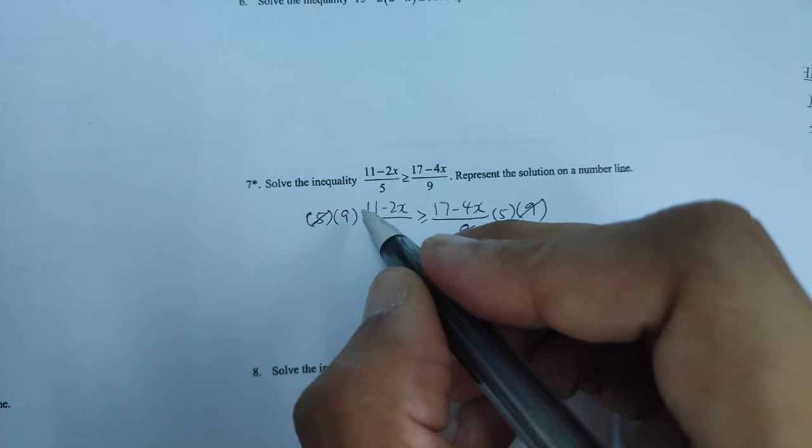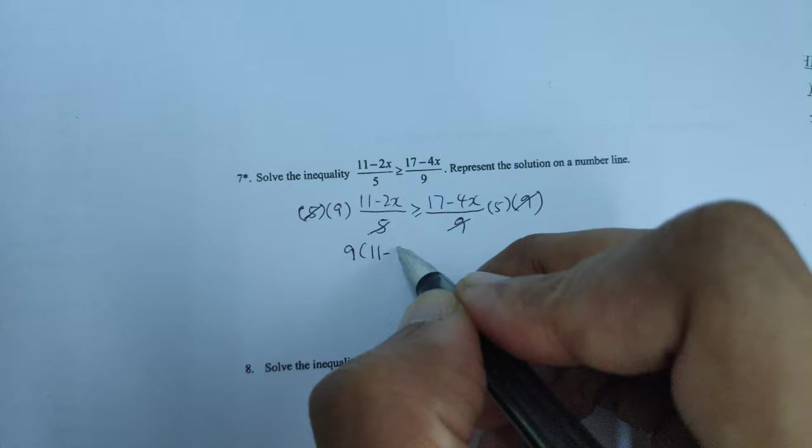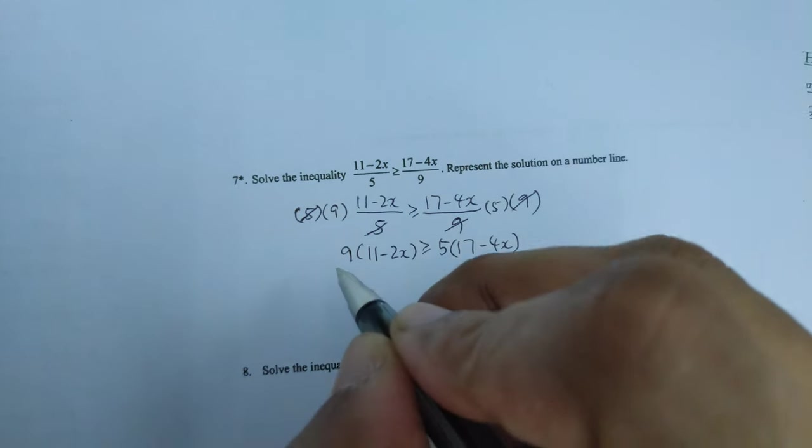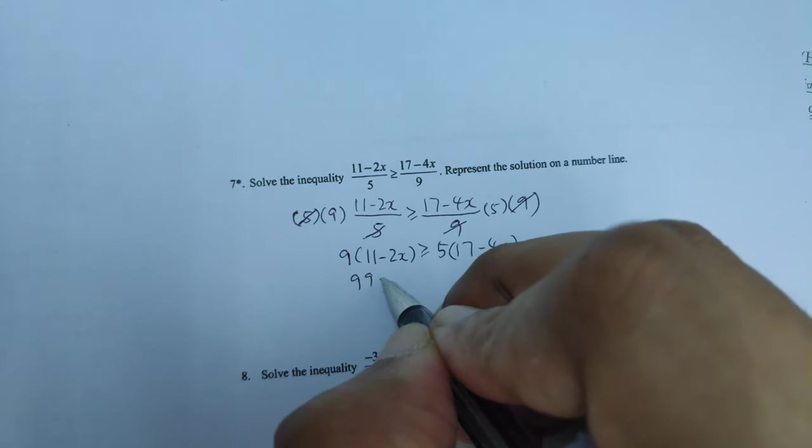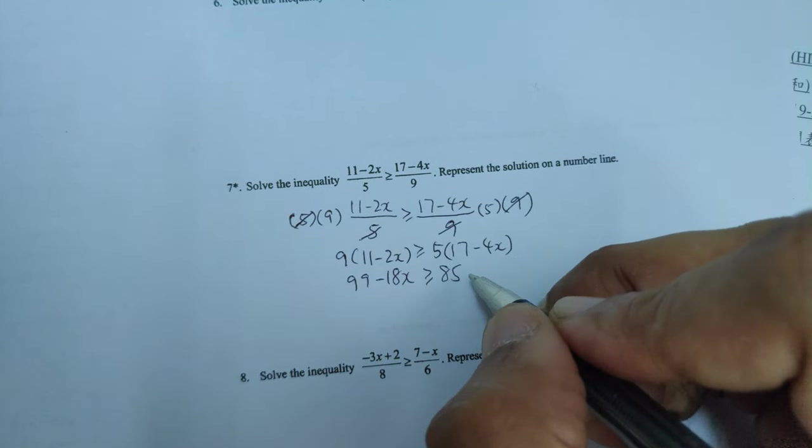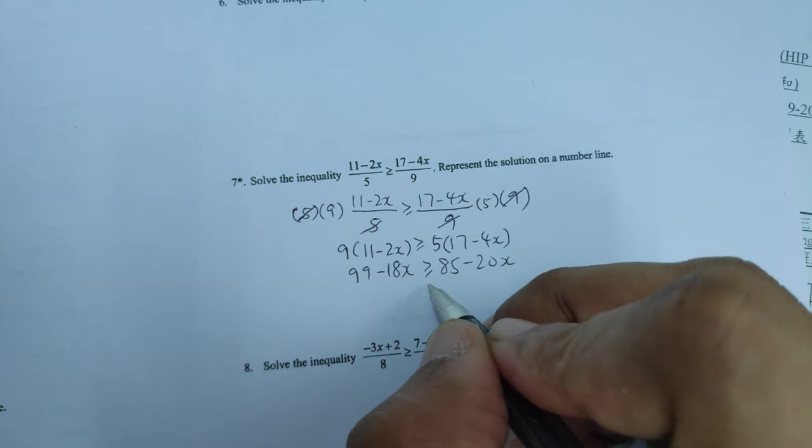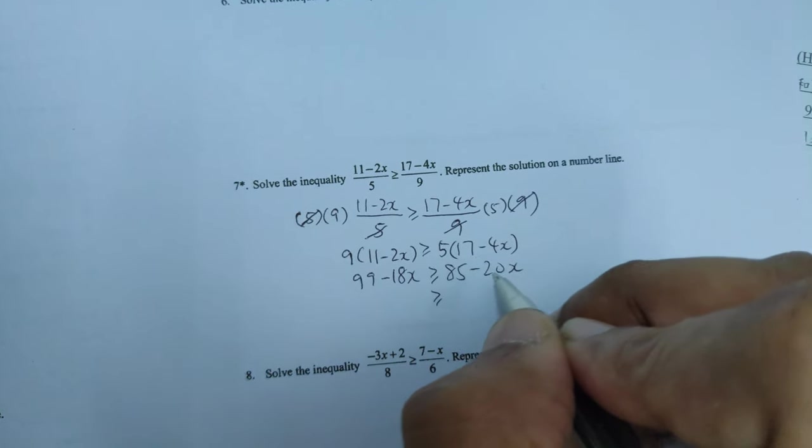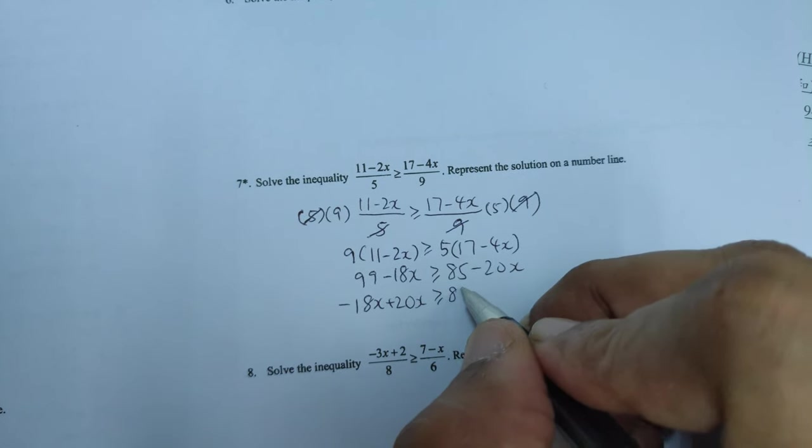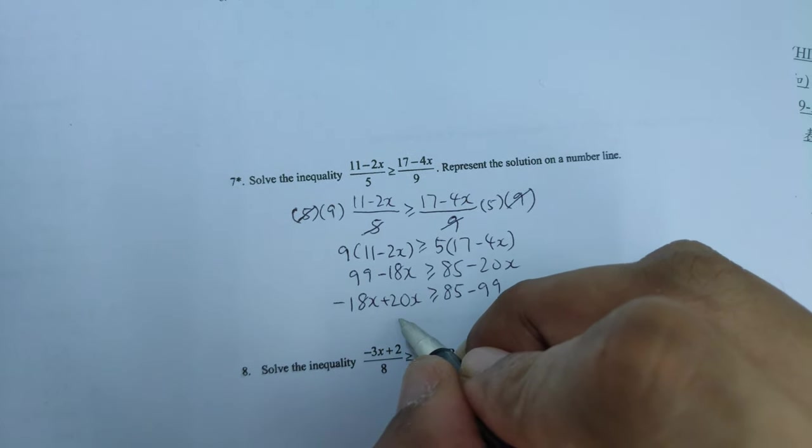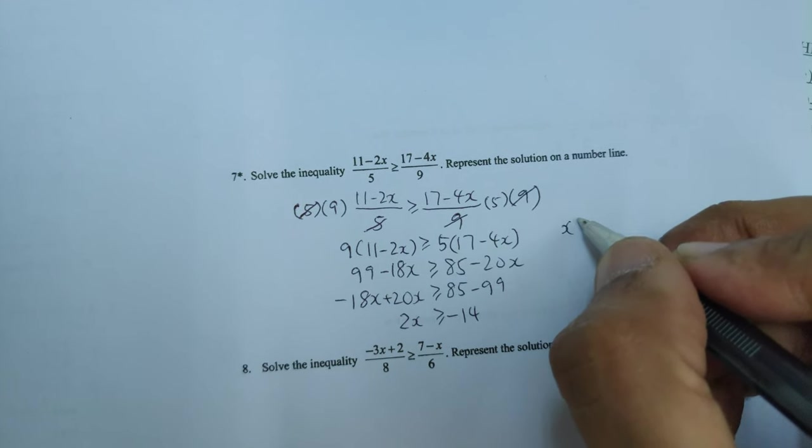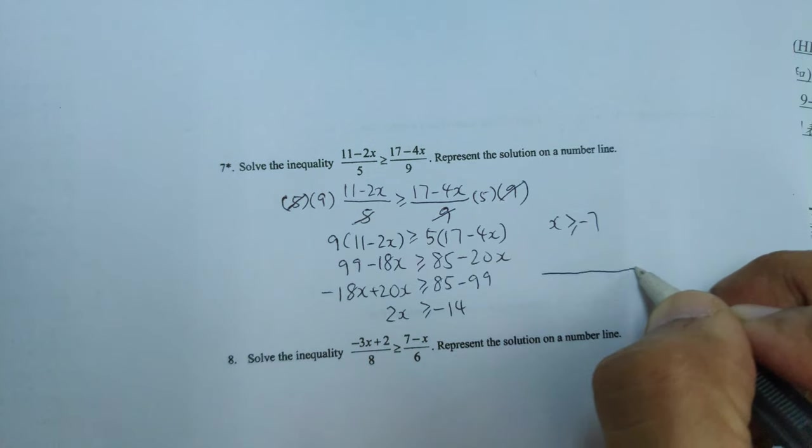And what will happen is that the nine is going to multiply everything on the top. So make sure you can write that step in so that you remember what to multiply. Then nine times eleven is ninety-nine, nine times two is eighteen, five times seven is eighty-five, five times four is twenty. And then which way to move? Negative twenty is smaller, so I'll add the twenty next to this side. And that is 2x, that's negative fourteen. And then if you divide the two over, you get negative seven.